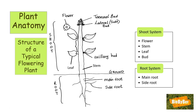There are two other terms we need to know, but they are not organs. A node is a place where the leaf is attached to the stem — when a leaf falls off it leaves a mark where it was attached. An internode is the distance between two nodes, in other words the distance between two leaves.